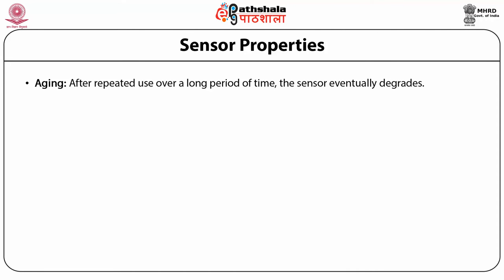Aging: after repeated use over a long period of time, the sensor eventually degrades. The time it takes to degrade describes how the sensor ages. This is shown in a figure which shows that at one point in time the response is flat, and after a certain time elapses the response versus time graph changes.